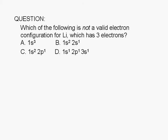Which of the following is not a valid electron configuration for a lithium atom which has three electrons? A, 1s³. B, 1s² 2s¹. C, 1s² 2p¹. Or D, 1s¹ 2p¹ and 3s¹.